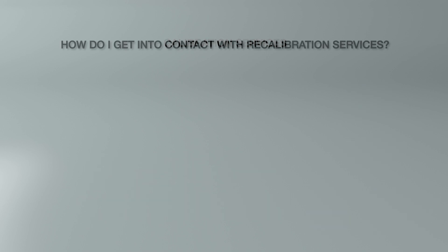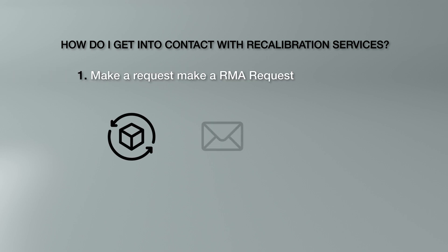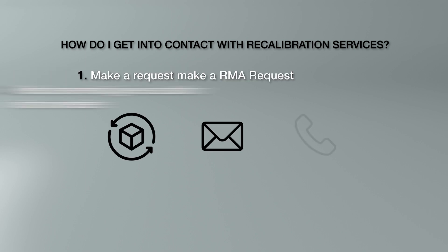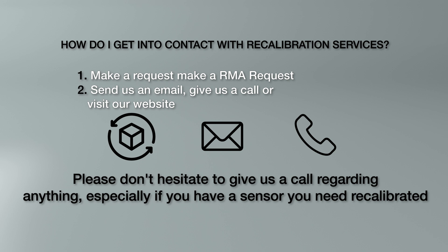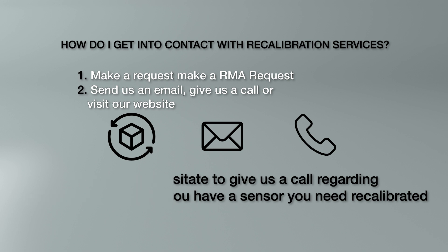How do you get these recalibration services, or if you need a repair, who do you talk to? The first step is to make an RMA request. Send us an email, give us a call, or visit our website — there is an RFQ form for an RMA. Please don't hesitate to give us a call regarding anything, especially if you have a sensor you need recalibrated.